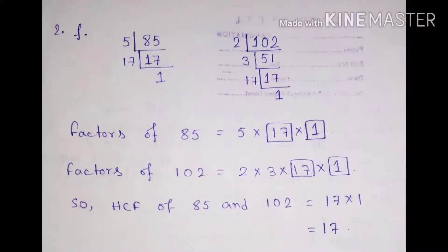Prime factors of 85 and 102. And then we have taken the common two factors, that is 17 and 1. And after multiplying 17 and 1 we got 17 as the HCF of 85 and 102.